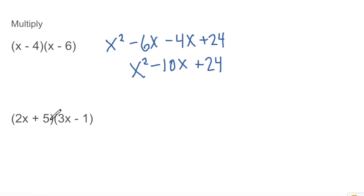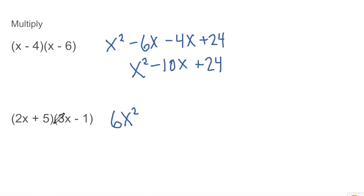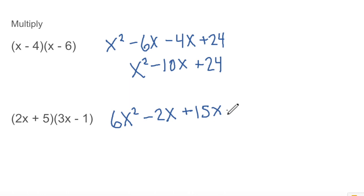Let's try another one. Here we have coefficients of x — a 2 in front of this x and a 3 in front of this x. That changes things a little bit, but not much. So 2x times 3x: we multiply these constants — 2 times 3 is 6 — so the first gives us 6x squared, because we also square the x. The outer: negative 1 times 2x gives us negative 2x. And the inner: positive 5 times 3x gives us positive 15x.